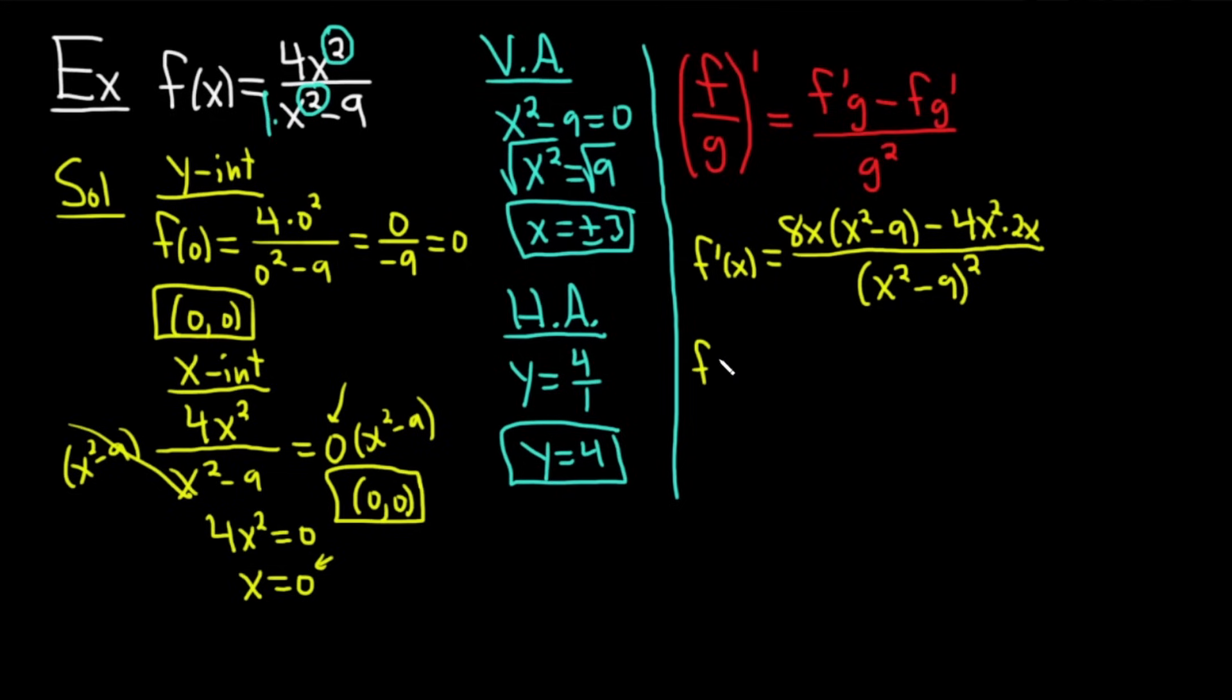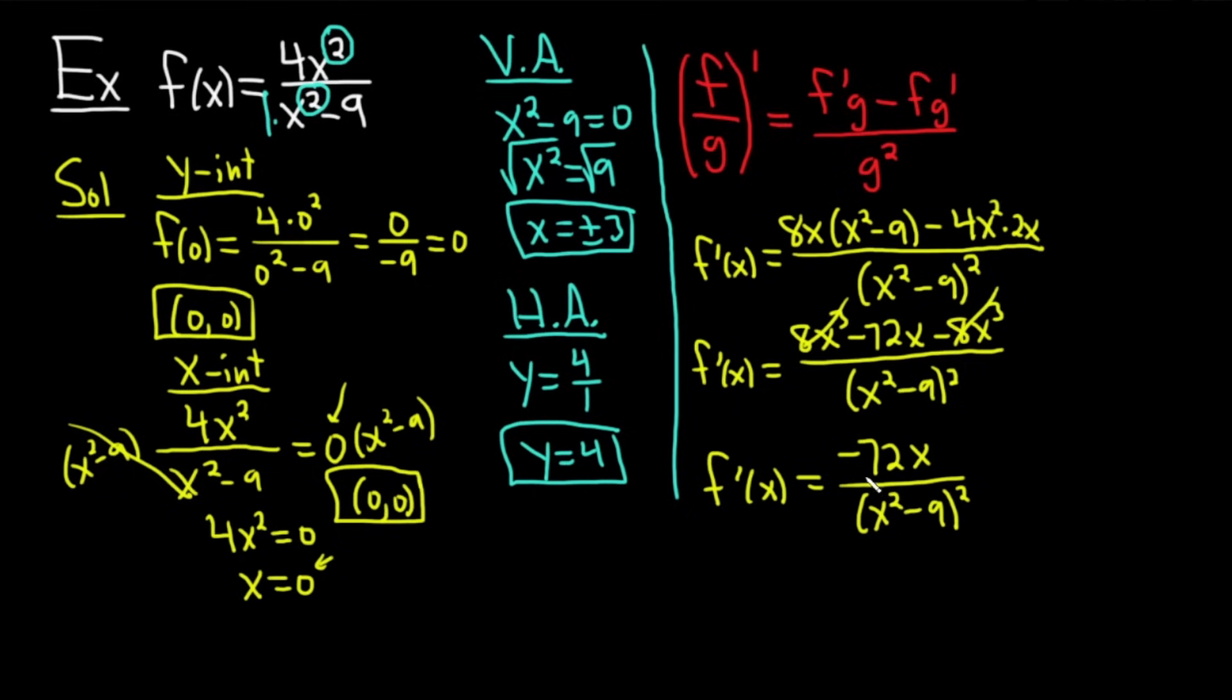We can clean this up. Distributing the 8x: 8x times x² is 8x³, and 8x times -9 is -72x. The last term will be -8x³. All divided by (x² - 9)². And these cancel, these 8x³ terms. So we have f'(x) = -72x/(x² - 9)². So this is the first derivative, super important.